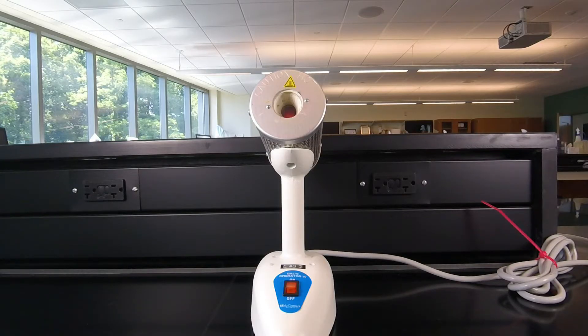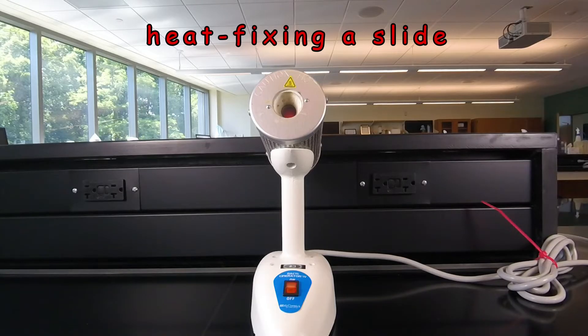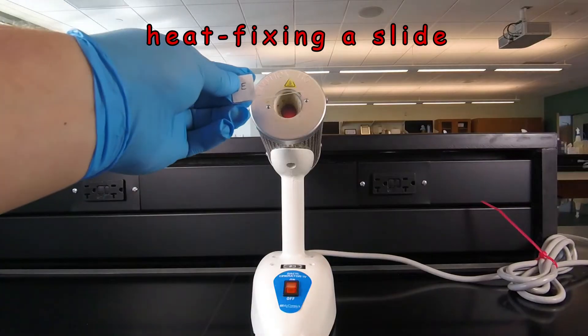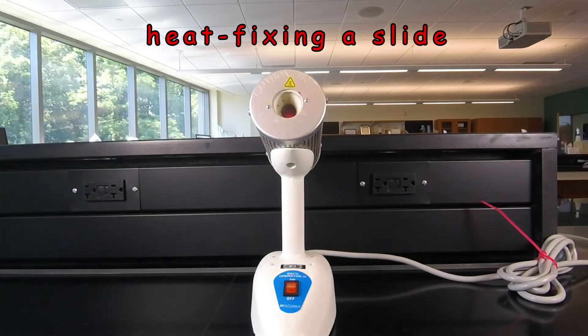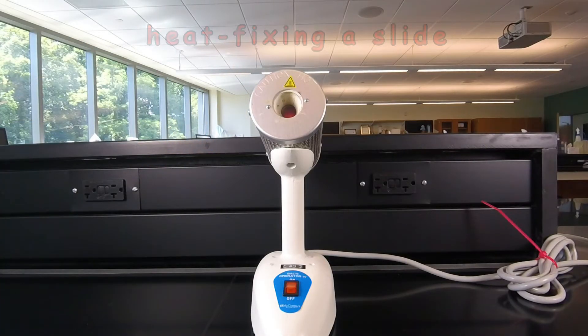Now that our slide is air-dried, we're ready to fix the bacteria to the slide so they don't wash off. In this video lesson, I'm going to show you how to do heat fixation, where we'll hold the slide against the opening of a Bacti-cinerator. The heat will coagulate the protein in the bacterium, causing it to stick to the slide.